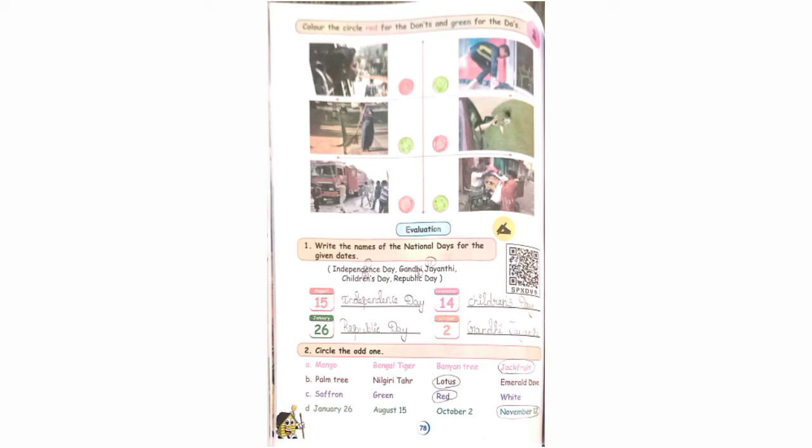Students, take page number 78. Look at the top: colour the circle red for the wrongs and green for the goods. If an action is wrong, you have to colour it in red. If the action is good, you have to colour it green. First one: spitting is wrong, so colour it red. Second: wearing shoes and socks is a good habit, so put green colour in the circle. Third: cleaning is a good one, so colour it green.